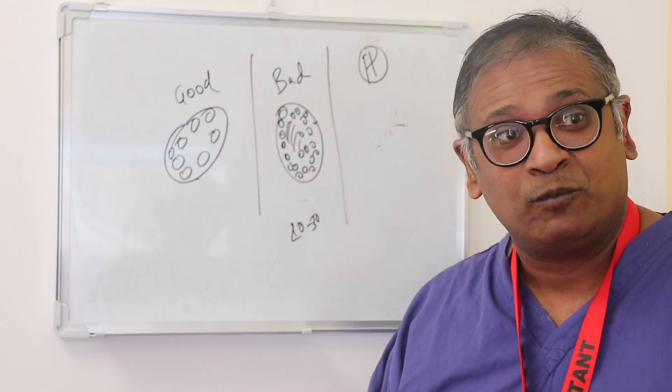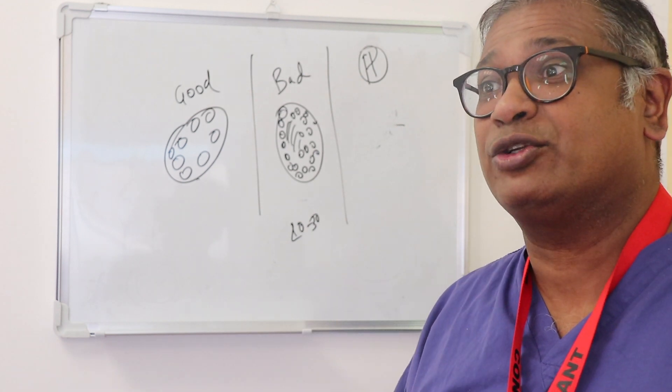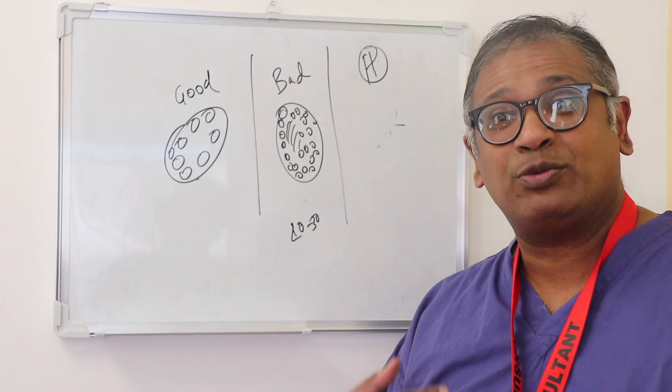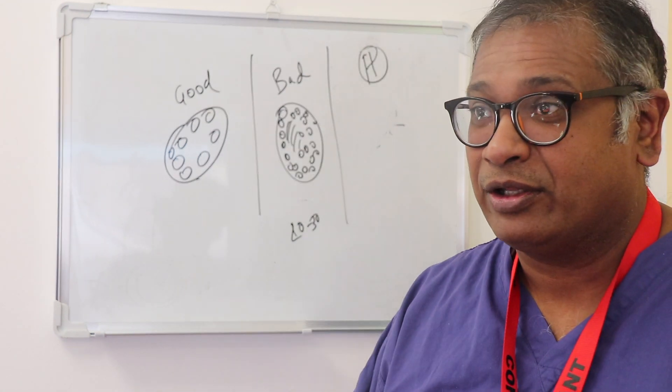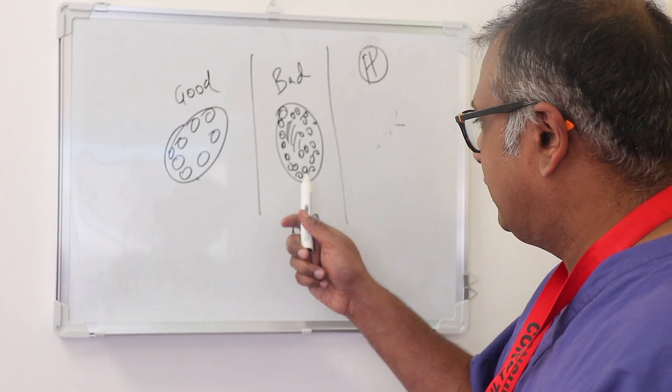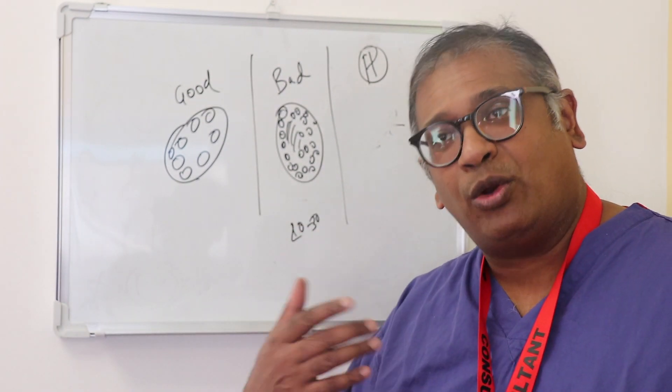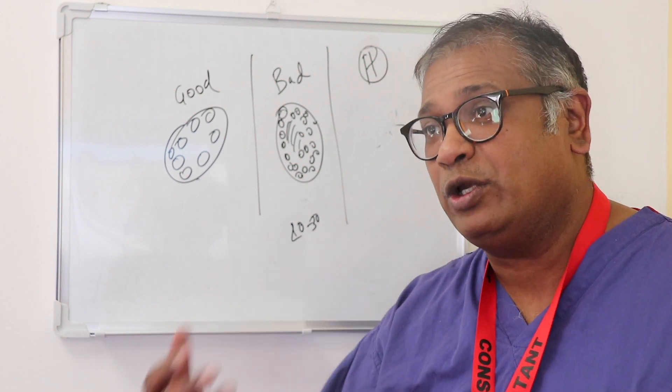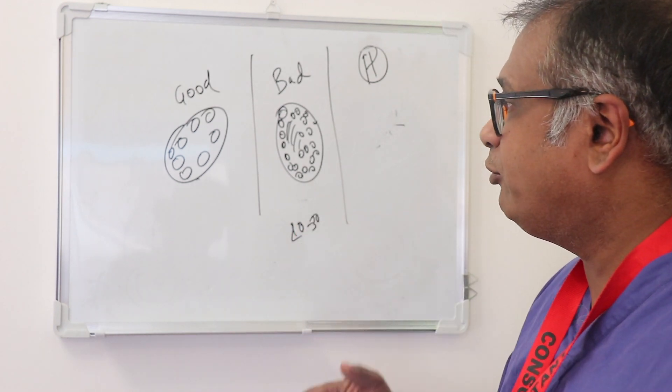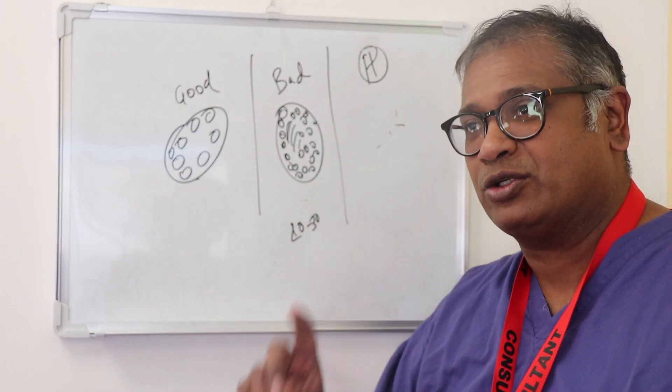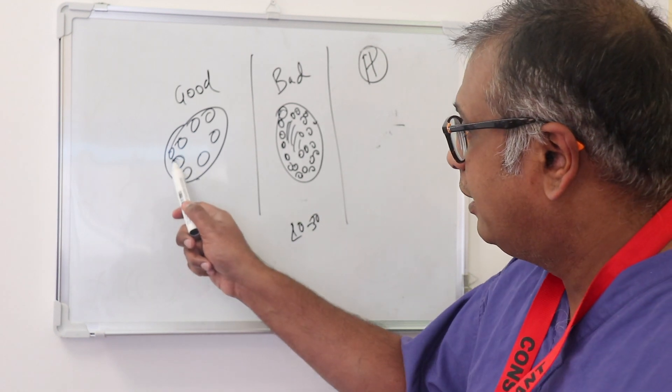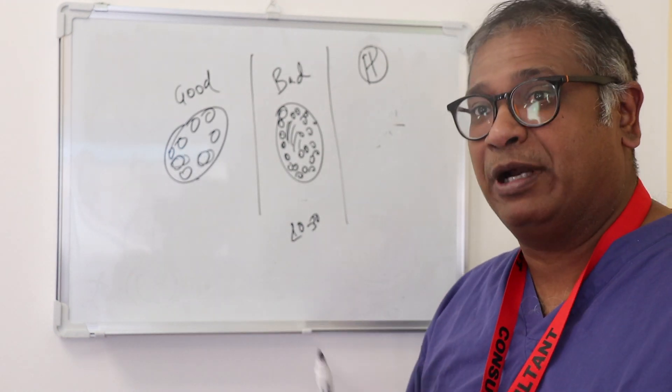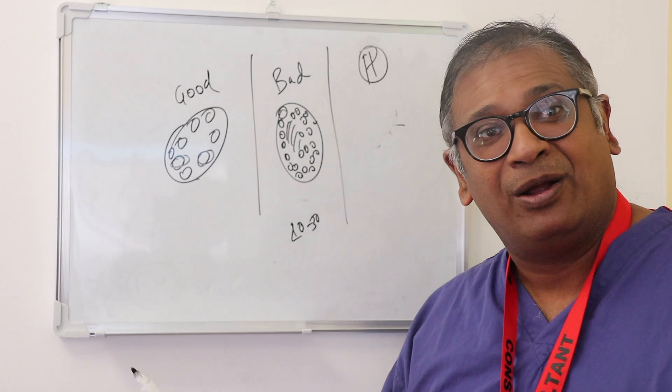That's why when some stimulation or ovulation induction produces only 2 follicles growing, the question is why. It basically means these follicles will not respond to a lower dose, they'll respond only to a higher dose. You have to break the threshold of multiple follicles, not just one follicle. It's easier to break the threshold when they are all in one line.